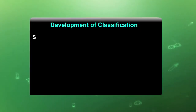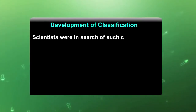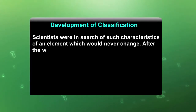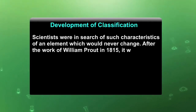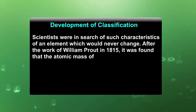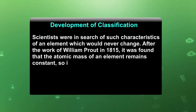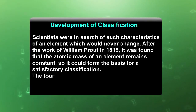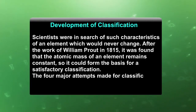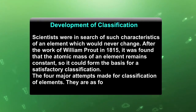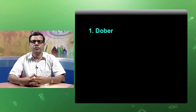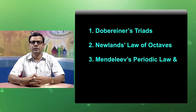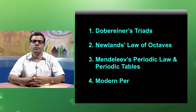Development of classification: Scientists were in search of characteristics of an element which would never change. After the work of William Prout in 1815, it was found that the atomic mass of an element remained constant, so it could form the basis of satisfactory classification. The four major attempts made for classification of elements are: Dobereiner's Triads, Newlands' Law of Octaves, Mendeleev's Periodic Law and Periodic Table, and the Modern Periodic Table.